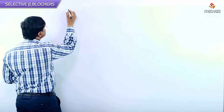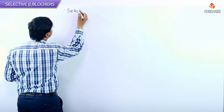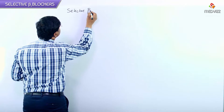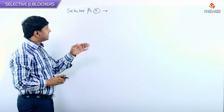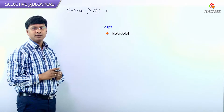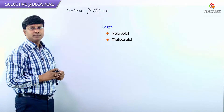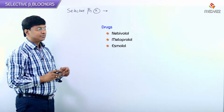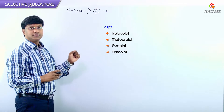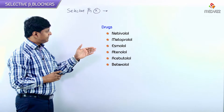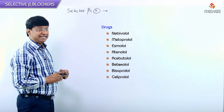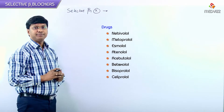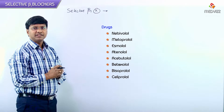Of the beta blockers, the selective beta-1 blockers include nebivolol, metoprolol, esmolol, atenolol, acebutolol, betaxolol, bisoprolol, and celiprolol. These are the selective beta-1 blockers.